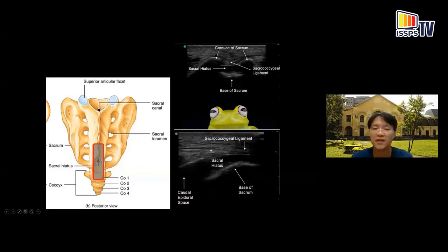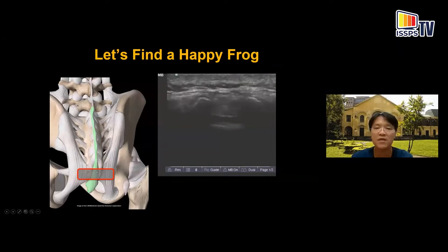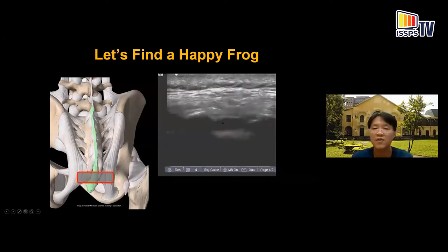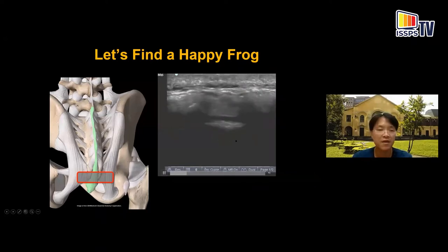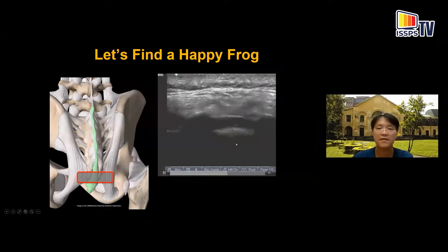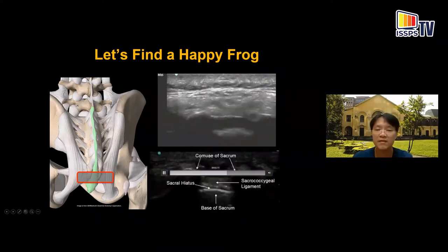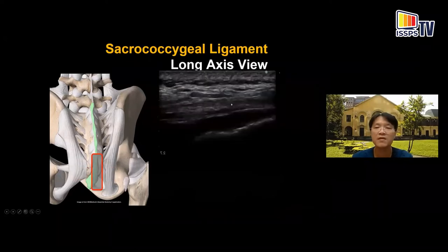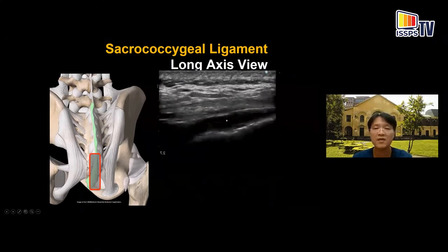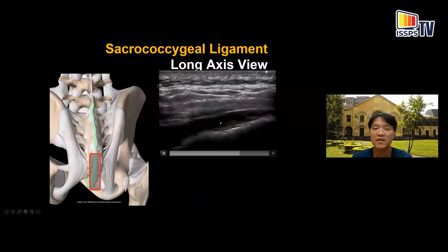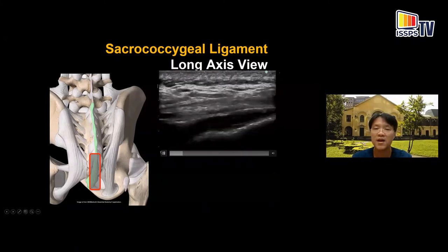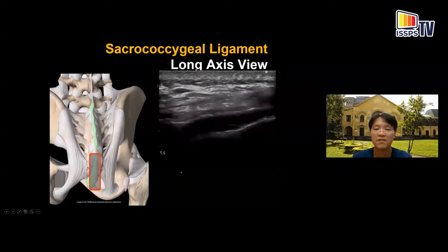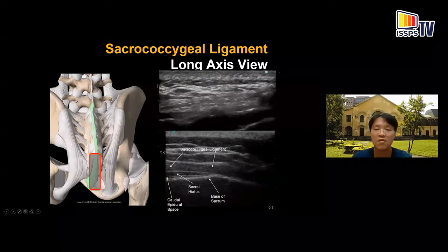Here is the sacrococcygeal ligament. The dynamic scan shows it covering the cornua. You can see the happy frog, and the epidural space is at the base of the sacrum. For degenerative spine, the sacral epidural space can be very thin. After we identify the sacrococcygeal ligament and the entry portal, we can scan back and forth — here is all bone, and here is the epidural space, underneath the bone. So the sacral epidural space can be very tiny and thin.